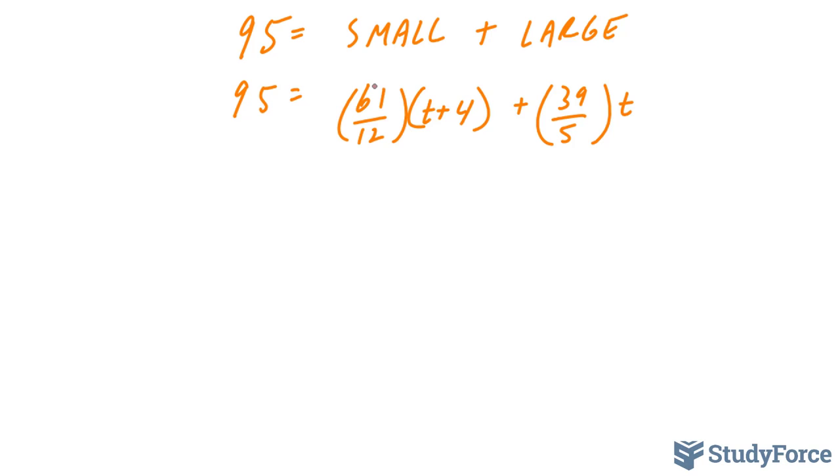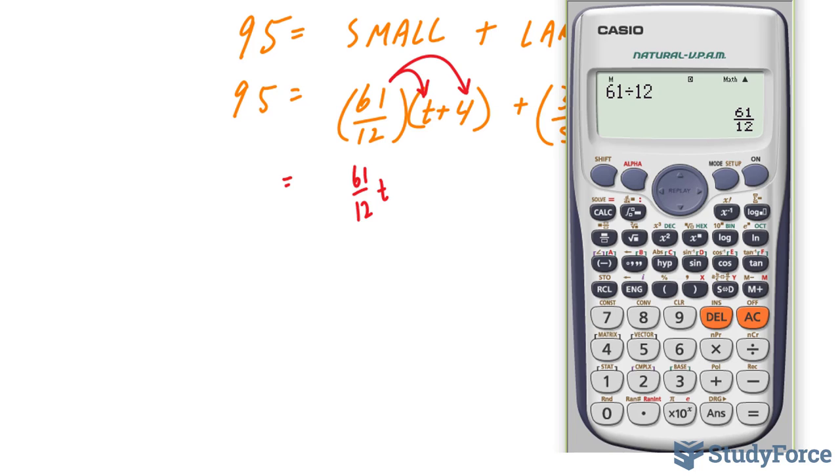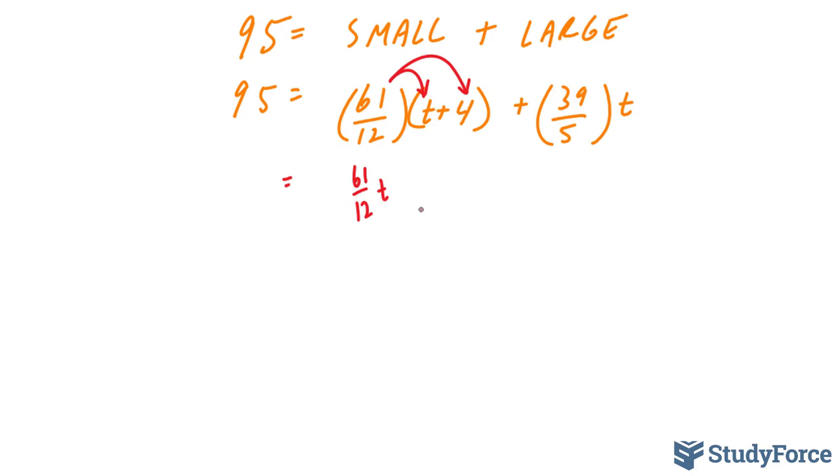Let's multiply this 61 over 12 into the t and into the 4. 61 over 12 times 4, multiplying this by 4, you should end up with 61 over 3. And this part remains the way it is, 39t over 5, and here we have 95.